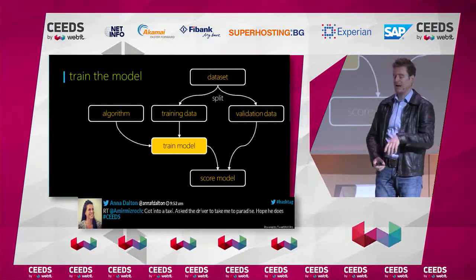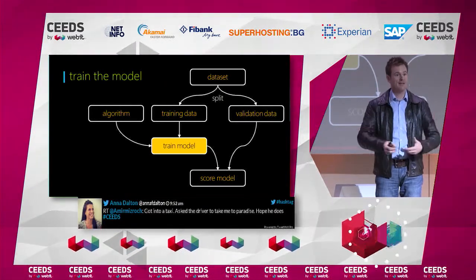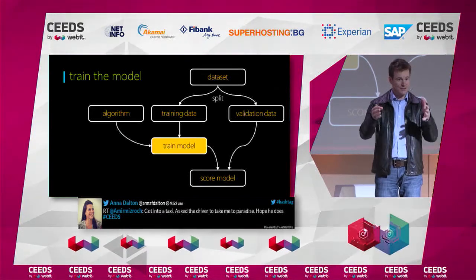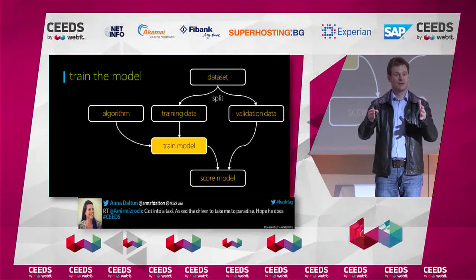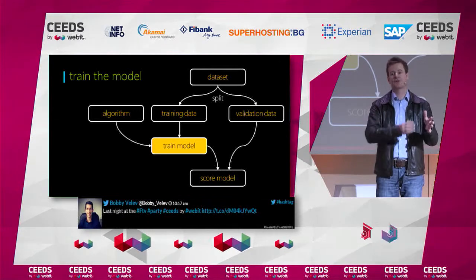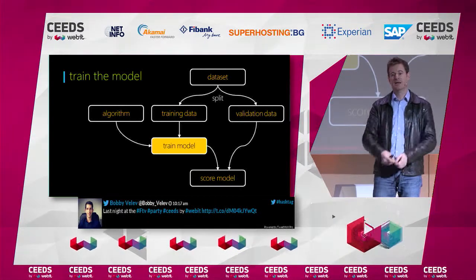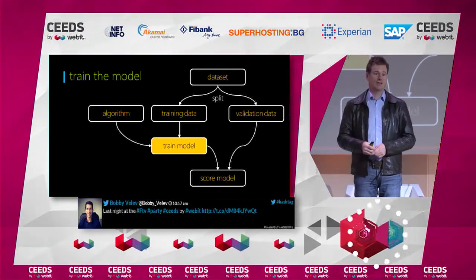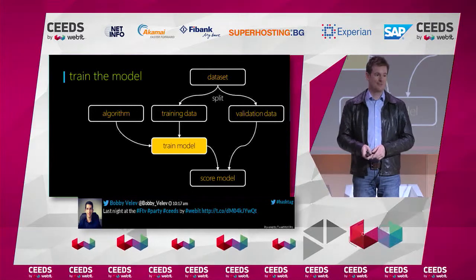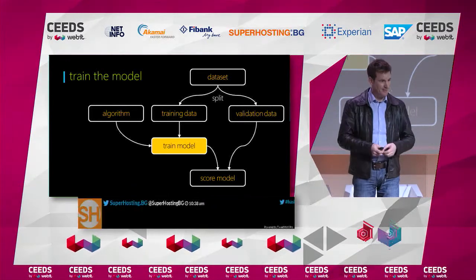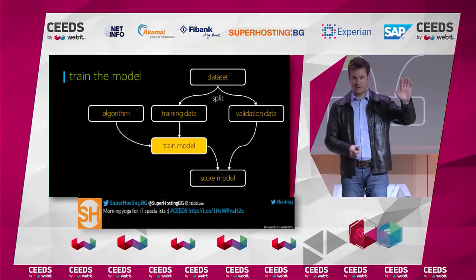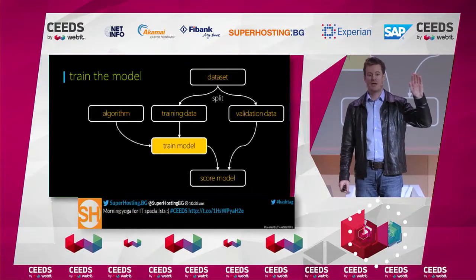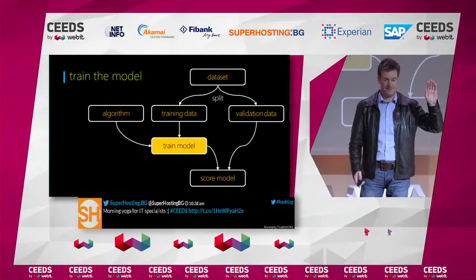So that's the classical flow: you have a data set, you work on it to label it and make it a useful data set, you train the algorithm, and then you evaluate this algorithm by scoring it. If you're happy with it, you take this trained model and put it into production to make real-time scoring.